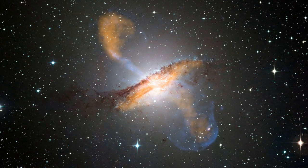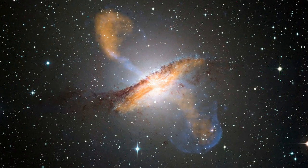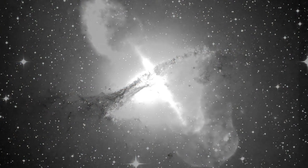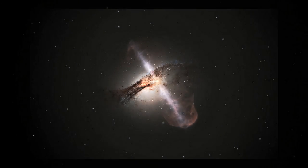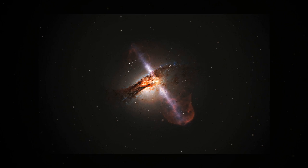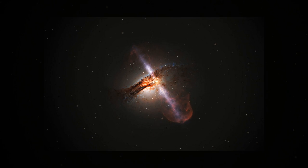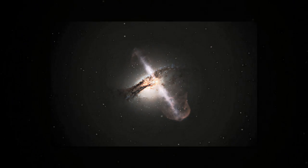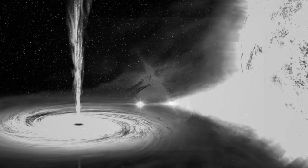When a star comes too close to a black hole, the intense gravity results in tidal forces that can rip the star apart. In these events, called tidal disruptions, some of the stellar debris is flung outward at high speeds, while the rest falls toward the black hole.